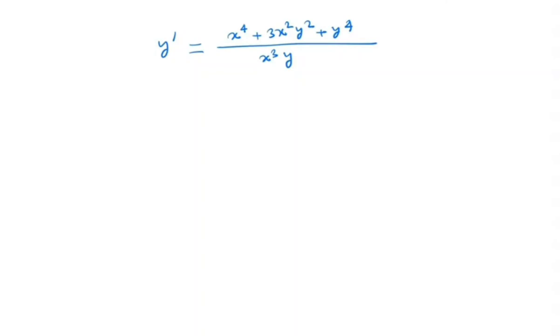In this method, what we will do? We will make a transformation of variable y. y is equal to vx. So, by differentiating both sides, we get y prime is nothing but v plus x dv/dx. So, if we put this in both sides, we have v plus x dv/dx is equal to x⁴ plus 3x²v²x² plus v⁴x⁴ divided by x³ times vx.